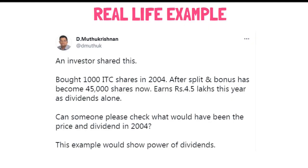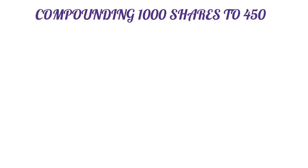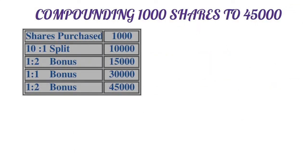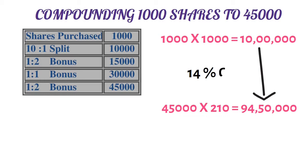Let's look at a real investing story with ITC. An investor bought 1000 shares. Over the years, they received bonus shares, growing their holdings to 45,000 shares. In 2020, 45,000 shares were worth 94,50,000 rupees. Originally in 2020, ITC shares had 1000 rupees invested, totaling about 10 lakhs. That investment grew to 94 lakhs, representing approximately 14% annual growth rate.